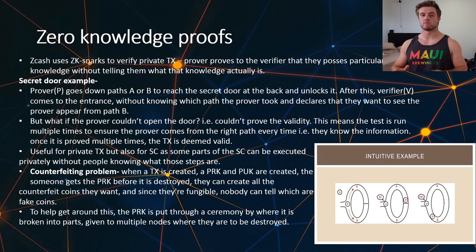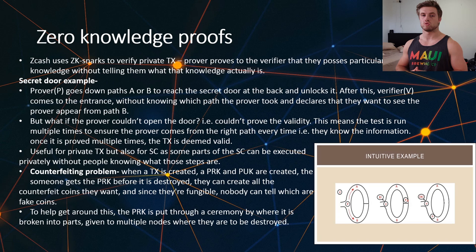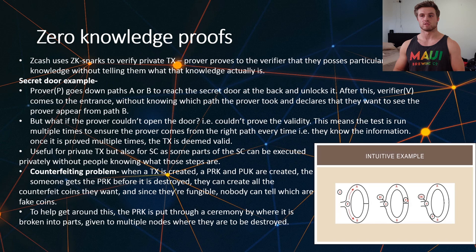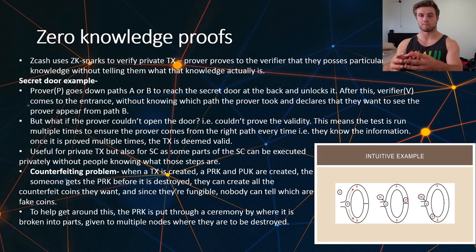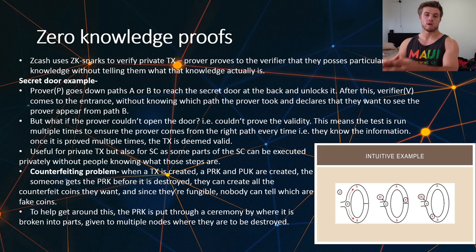Now I want to talk about the real technology behind Zcash and what makes it special, and this is the use of ZK-SNARK technology. What ZK-SNARKs use are something called Zero Knowledge Proofs and this is how Zcash allows private transactions. How a Zero Knowledge Proof works is that you'll have a prover, aka the sender, and then a verifier, aka the node. The prover will have to prove to the verifier that they possess particular information without telling the verifier what the information actually is.